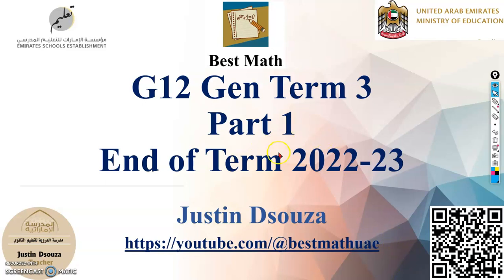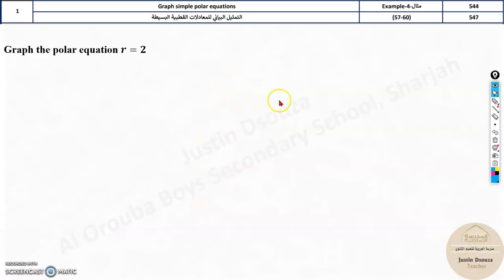We will begin with part 1. First question. It is about graphing polar equations, simple polar equations. You can see over here they have told r is 2. We need to solve it.